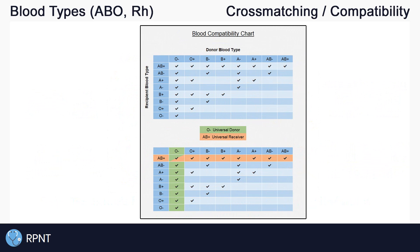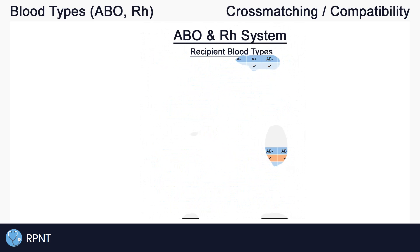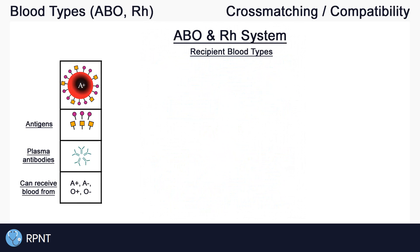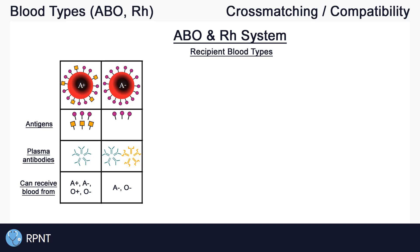Now I'll quickly walk through all eight blood types. Someone with A positive blood has A antigens, Rh antigens, and B antibodies. They can receive blood from anyone without B antigens, which includes A positive, A negative, O positive, and O negative. Someone with A negative blood has A antigens, Rh antibodies, and B antibodies. They can receive blood from anyone without Rh and B antigens, which includes A negative and O negative.